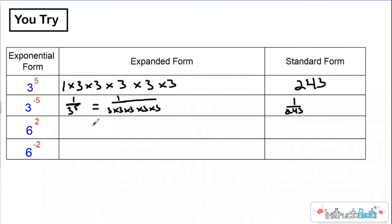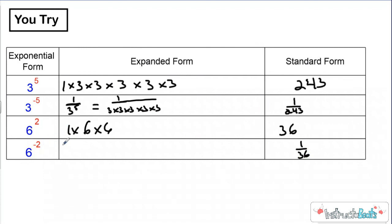Let's take a look at this next one. Six squared really just means six times six — you're starting with that one and multiplying by two copies of six, which is going to be 36. If you're following the shortcut, you know the answer should be one over 36. Six raised to a negative two power really means we're doing one divided by six squared. In expanded form it'd be one divided by six times six, which when you solve it is one over 36.